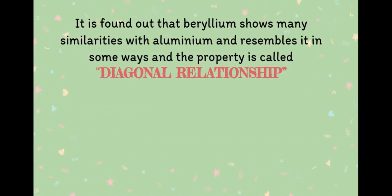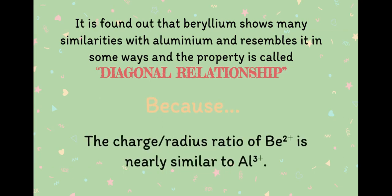Surprisingly, it is found that beryllium and aluminium, present diagonally in the periodic table, exhibit a property called diagonal relationship where both show similarities and resemblance because beryllium's charge by radius ratio is more or less equal to that of aluminium.